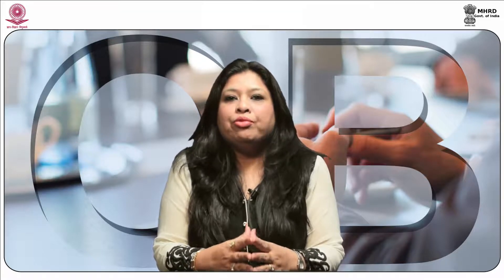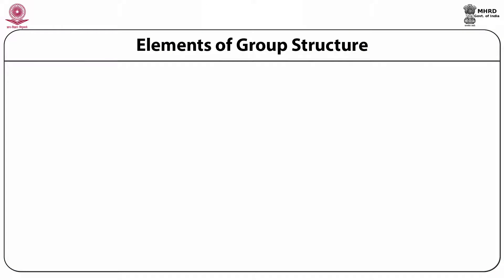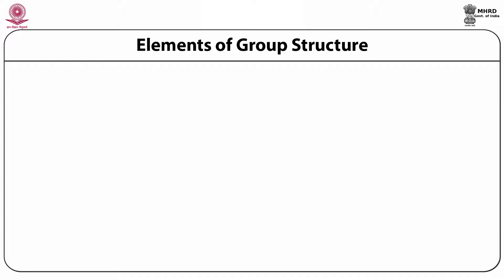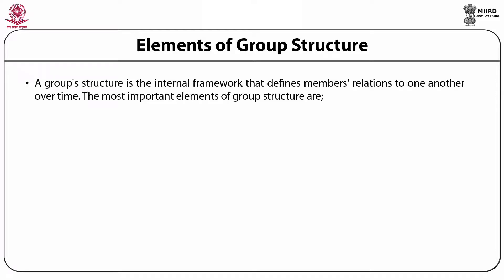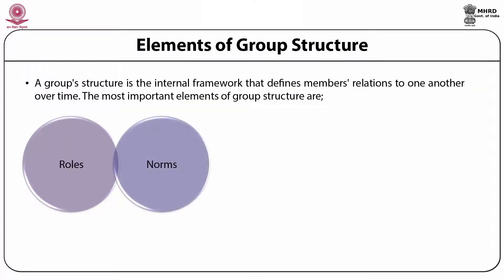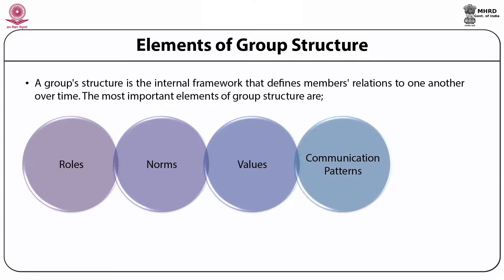Understanding group behavior in terms of its cohesiveness and social loafing is of paramount importance and should be well taken care of before the group is formed. Let's understand the elements of a group structure. A group structure is the internal framework that defines members' relations to one another over time. The most important elements of group structure are roles, norms, values, communication patterns and status differentials.